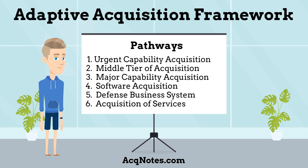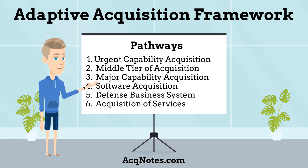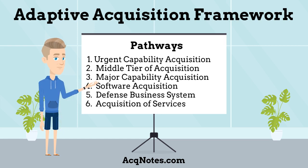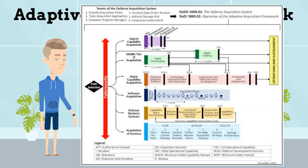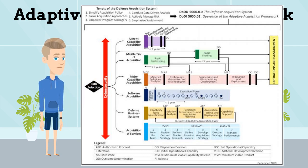The six distinct acquisition pathways are: 1. Urgent Capability Acquisition, 2. Middle Tier of Acquisition, 3. Major Capability Acquisition, 4. Software Acquisition, 5. Defense Business System, and 6. Acquisition of Services. In the main guidance, DOD Instruction 5000.02, there is a great chart that depicts each of these pathways that is very useful. I will go into more detail on each of these pathways next.